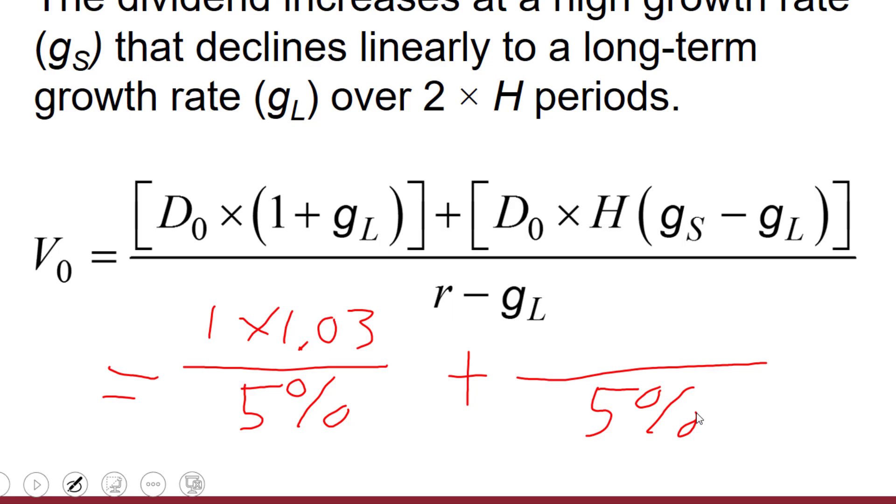And in the numerator for the second term, we've got that initial dividend times the half-life of the linear decline, which is two and a half years. And we're going to multiply that times the difference between the short-run growth rate of 10% minus that long-run growth rate of 3%. So 10 minus 3 is going to be 7.